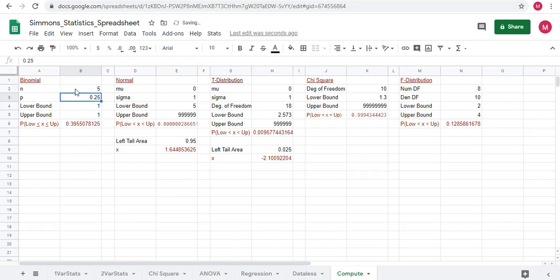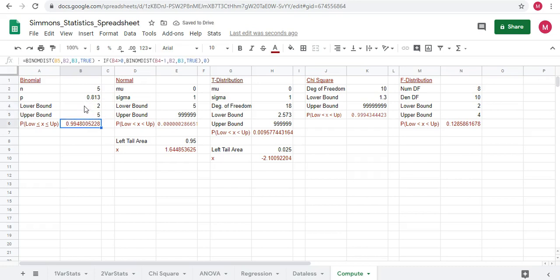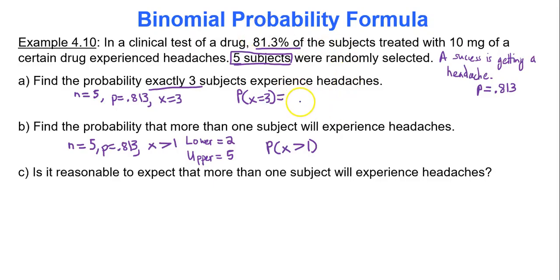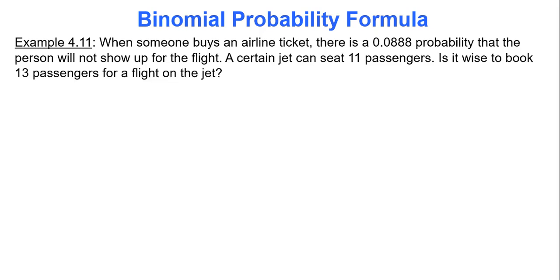In Google Sheets: number of trials is five, probability of a headache is 0.813. For part A — exactly three — lower and upper bounds are both three: result is 0.188. For part B — more than one — lower bound two, upper bound five: result is 0.995. Is it reasonable to expect more than one subject will experience a headache? Yes, because the probability is 0.995. That's an introduction to binomial probability distributions and using the formula for calculations.